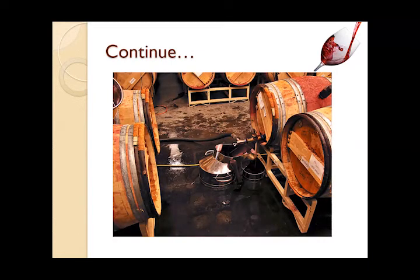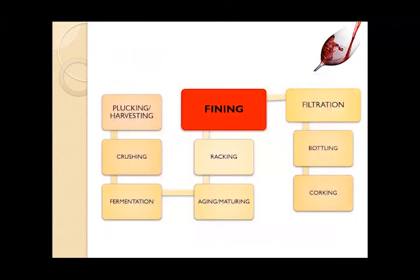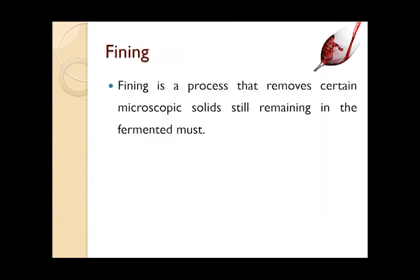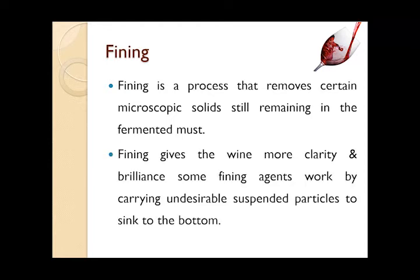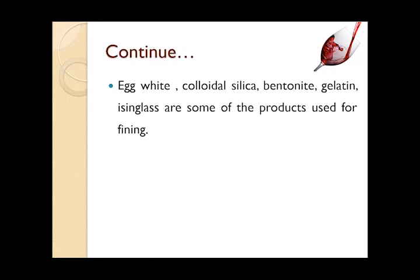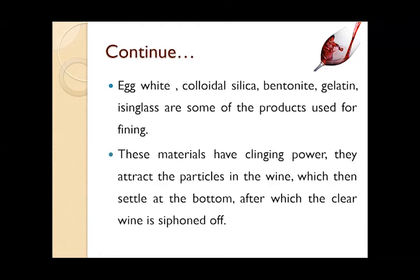The mechanical way of racking uses a pump. Once the racking is done, a process called fining is performed. In this step, it removes certain microscopic solids still remaining in the fermented must. Fining gives the wine more clarity and brilliance. Some fining agents work by carrying undesirable suspended particles to sink to the bottom. Common fining agents include egg white, colloidal silica, bentonite, gelatin, and isinglass.